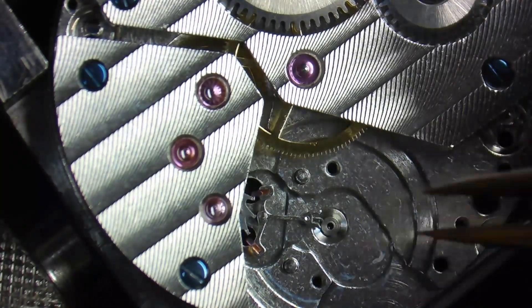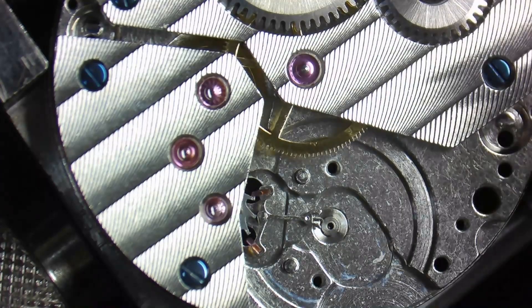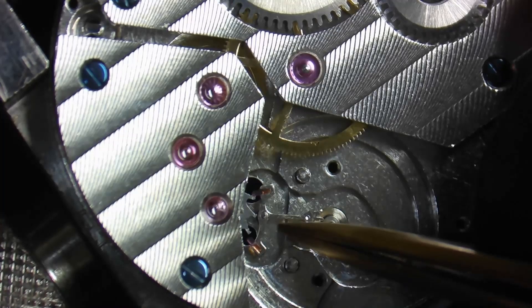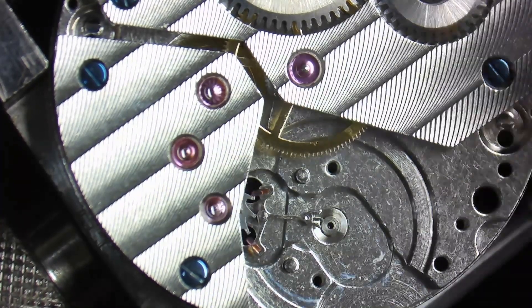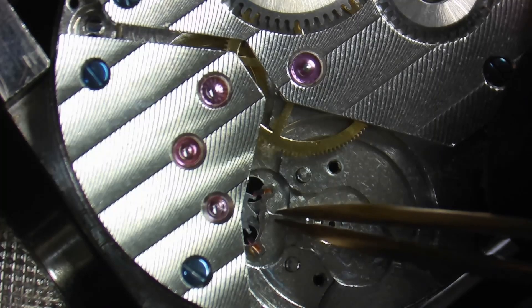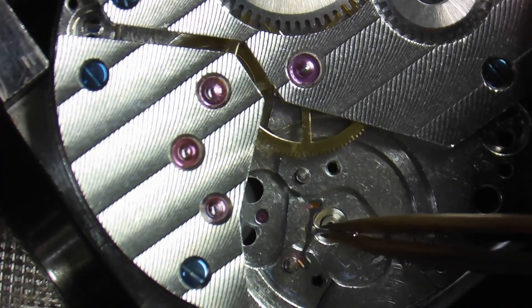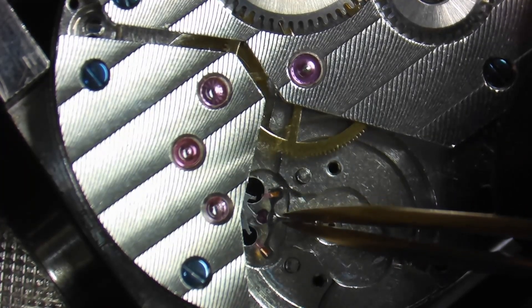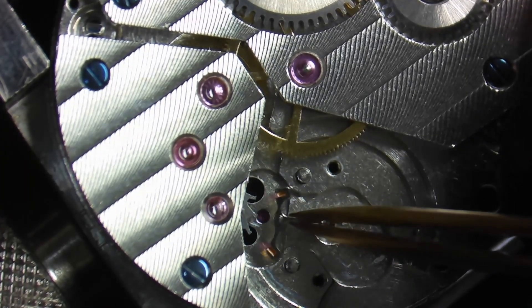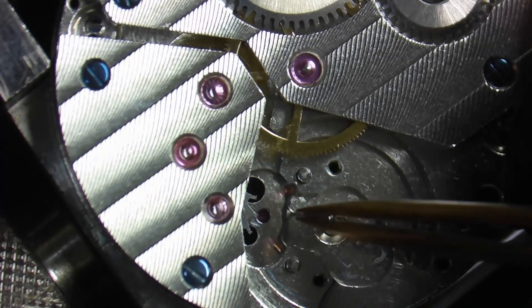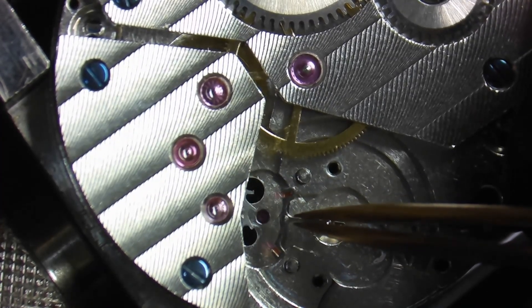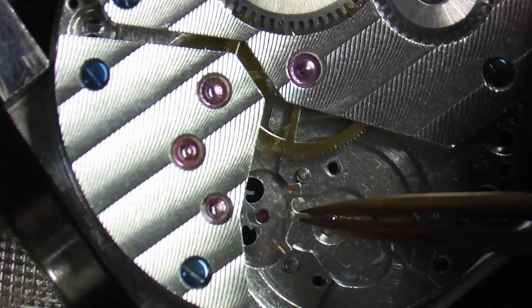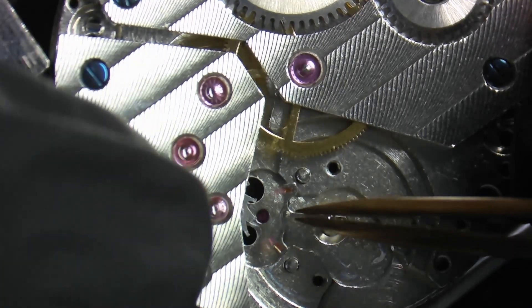Now take extreme caution removing the pallet fork as well. You want to make sure when you pick it up, that you pick it up by the pallet fork shaft or arm, pick it up straight up in the air. Now you might have noticed that the escape wheel spun a little bit. That is just a little bit of energy that's still left in the mainspring. That's nothing to worry about. What you don't want to do is have the mainspring at a half wind and pull it off. Then you have to worry about it breaking the jewels.